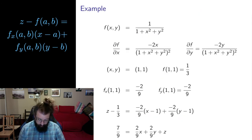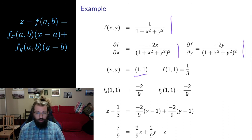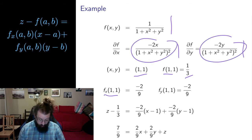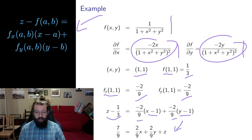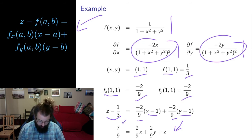Let me do an example. Here's a scalar field with its two partial derivatives, and I want to find the equation of the tangent plane to the graph above the point (1,1). I evaluate the function at (1,1) to get 1/3. The partial derivative in x gives me negative 2/9, and the partial derivative in y also gives me negative 2/9. Putting all the pieces into the tangent plane equation: z minus 1/3 equals negative 2/9 times (x minus 1) plus negative 2/9 times (y minus 1). You can rearrange that into a more conventional form and multiply by 9 to scale if you wish.